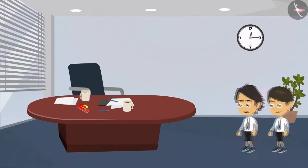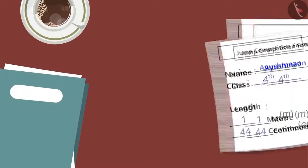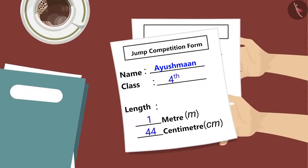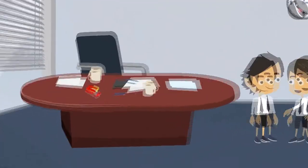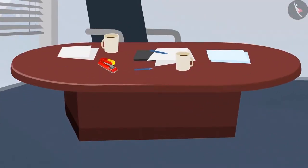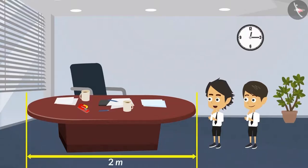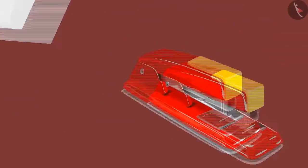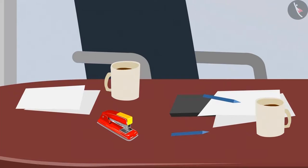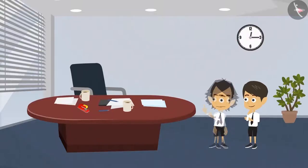The teacher is not here. Let's keep the form here. Now tell me, which unit will you use to measure this table? We will measure it in meters as it is very big. So will we measure the stationery items on the teacher's table — such as paper, stapler, and pen — in centimeters? Yes, because all these objects are very small.